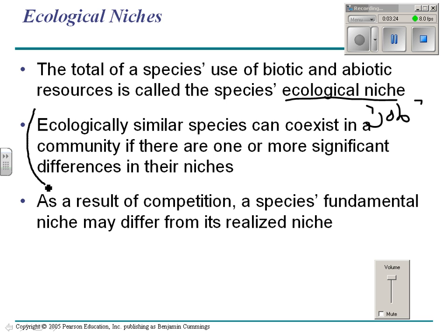Ecologically similar species can coexist if there are differences in what they do — there have to be differences. A species' fundamental niche — where it could live — may be different from where it really can live.